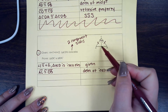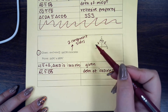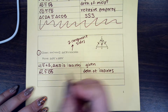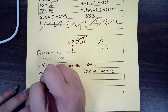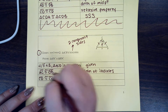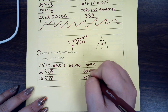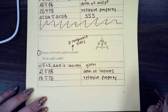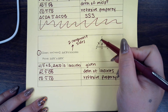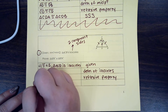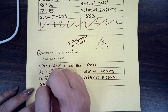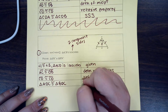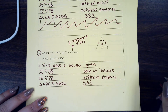What else can we figure out? Do we know anything about these angles? No. But they share something — so CD is congruent to CD, again, by the reflexive property.